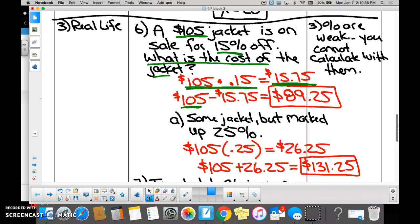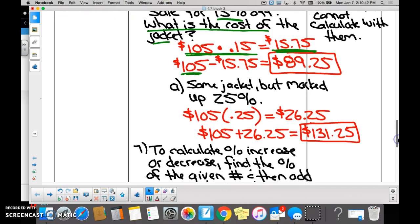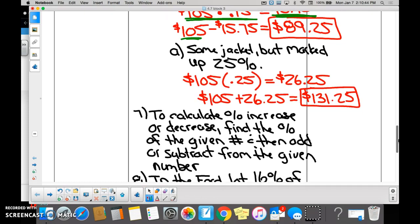Spark, it's marked up 25%. So again, we're finding 25% of 105, which is $26.25. And then what do we do with the $26.25? Added to the original number, right.